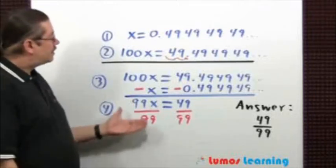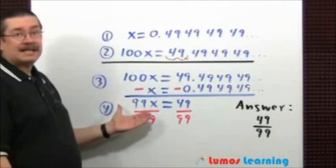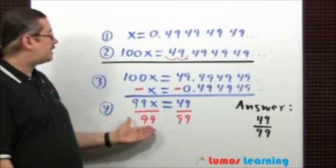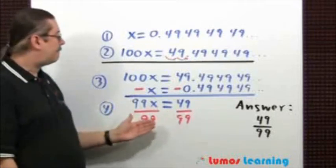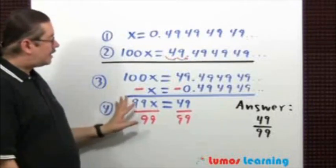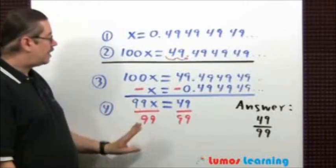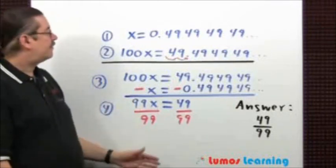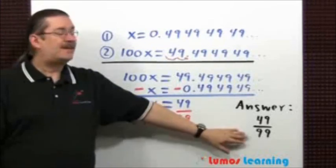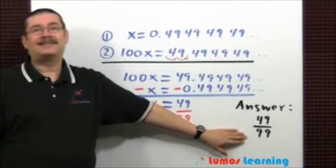Fourth step: just try to get x by itself. In this case, just divide both sides by 99. When you do that, the 99s cancel. You're left with just x, and the answer is going to be 49/99.